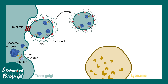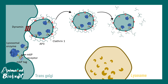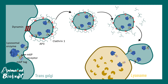The vesicle pinches off with the help of dynamin. The clathrin-coated vesicle containing the lysosomal enzyme with its receptor is now headed for lysosomal fusion. Eventually the coat dissociates and the vesicle fuses with the lysosome. Inside the lysosome, the pH is low, and this low pH causes the M6P-tagged protein to dissociate from its receptor. The receptors are then recycled back to the trans-Golgi, while the lysosomal enzymes remain inside the lysosome. This is how the mannose-6-phosphate tag mediates protein transport to the lysosome.